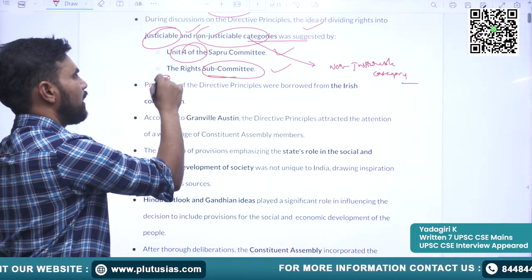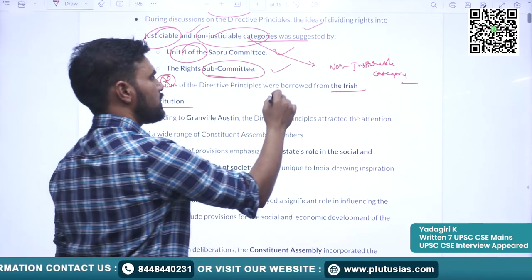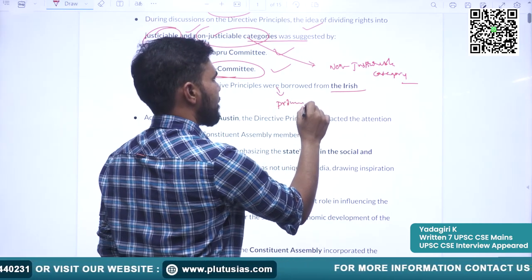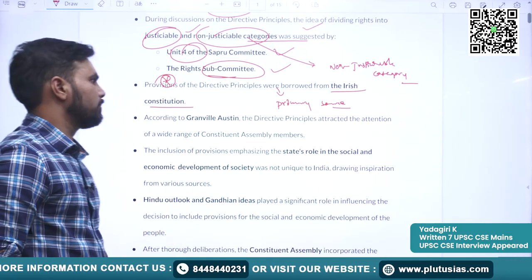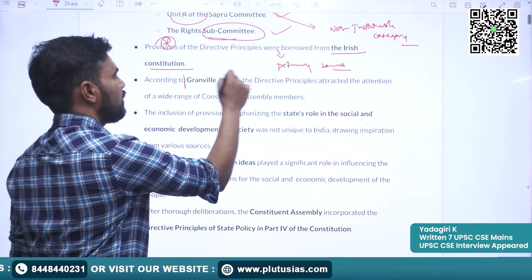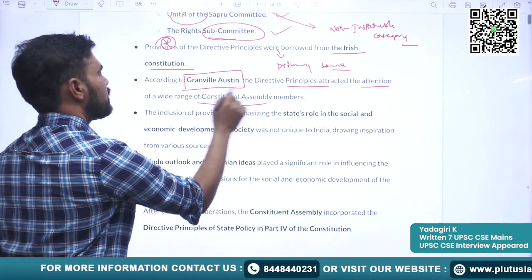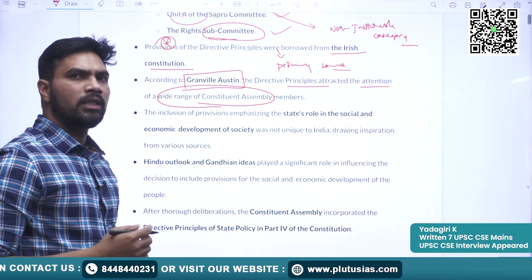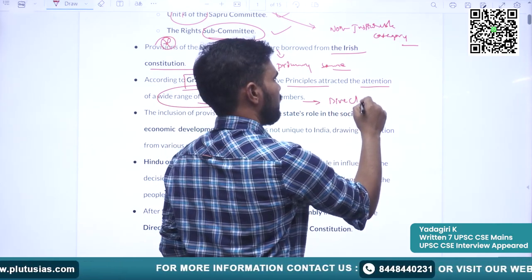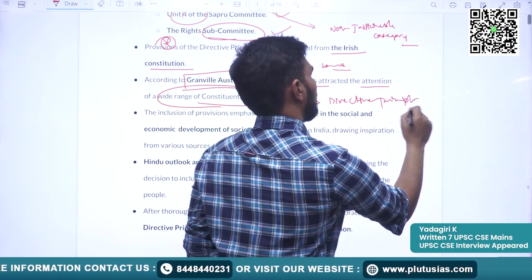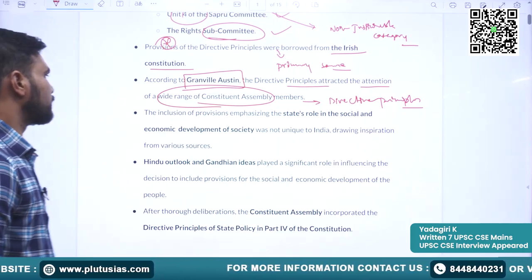The primary source we see for the directive principles is the Irish Constitution — the directive principles have been borrowed from the Irish Constitution. Constitutional expert Granville Austin opined that the directive principles attracted the attention of a wide range of Constituent Assembly members. The founding fathers wanted that a particular part for directive principles shall be there. The directive principles also carry the vision and ideals of the founding fathers.